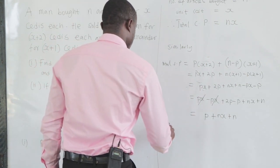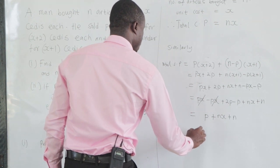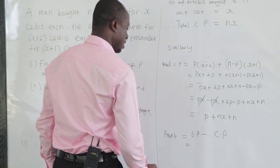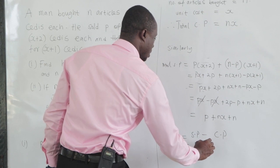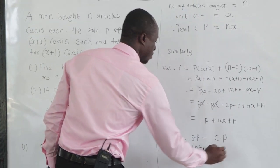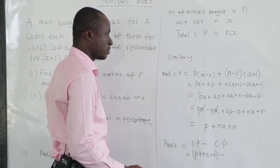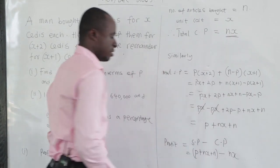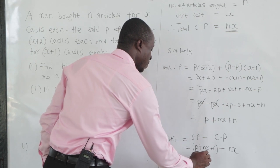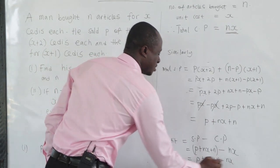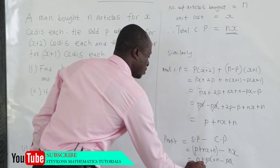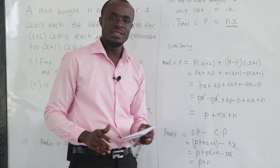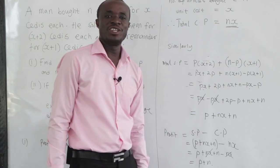Now for profit — that is selling price minus cost price. The selling price is P plus NX plus N, and the cost price is NX. So profit equals P plus NX plus N minus NX. Clearly, NX and NX cancel out. So our profit is P plus N. The first question asks us to express the profit in terms of P and N, and we have done that.